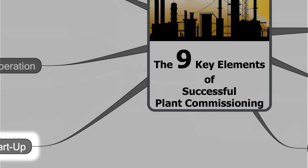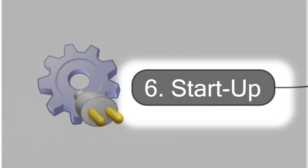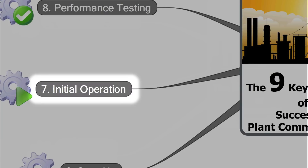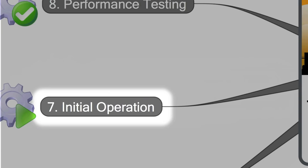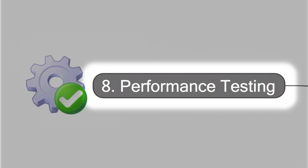Key element number 6 is startup. This means the entire plant will be taken slowly to full operation. Key element number 7 is the initial operation. This phase is necessary to prepare the performance test, and during this phase the entire plant will be optimized. Key element number 8, the performance test, is a big moment for the whole commissioning team — now we have to prove that the plant meets all specifications under normal operating conditions.